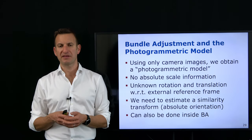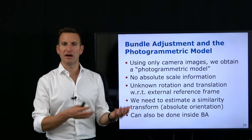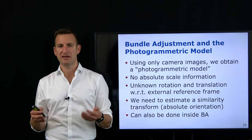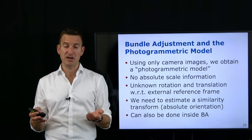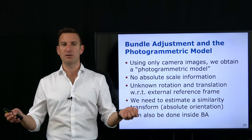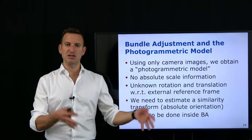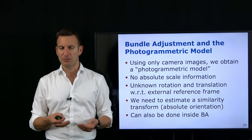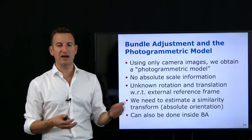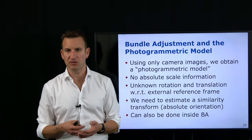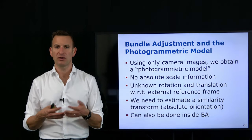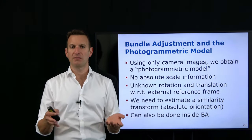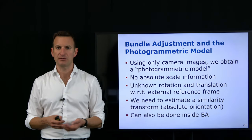This is solved with the absolute orientation problem, which we have discussed previously. If we know a certain number of points — in the simplest case three or more — whose 3D coordinates we know in the world, we can anchor that model using the absolute orientation approach. But we can also integrate this all into our bundle adjustment, simply adding the control points to our least squares problem and solving it jointly without explicitly executing the absolute orientation step.